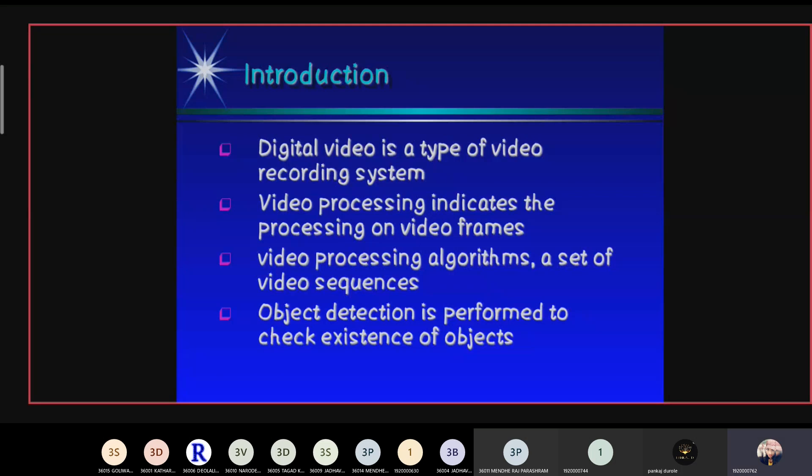In video frames and to detect that object, edge detection algorithm is used to identify the region of interest, and then the region of interest is tracked in subsequent frames using motion detection algorithms.